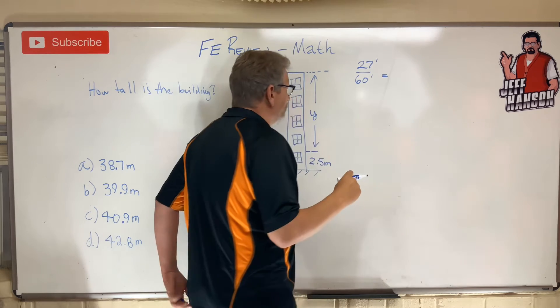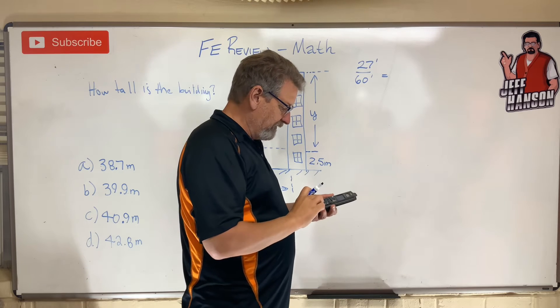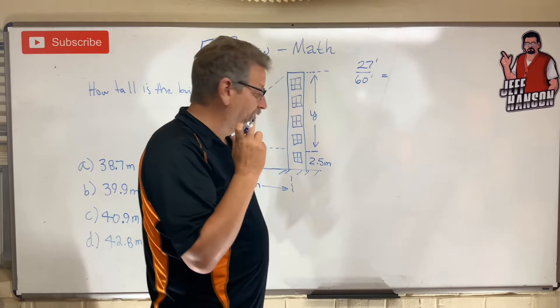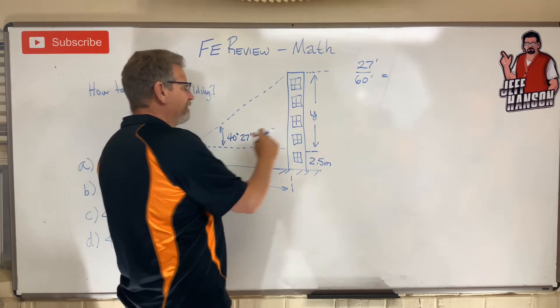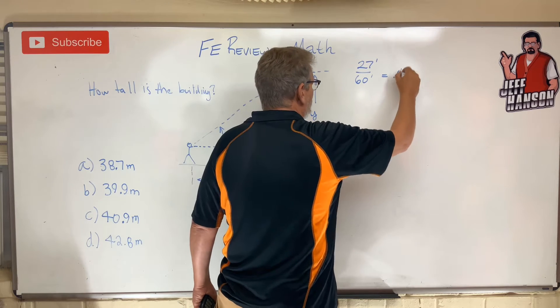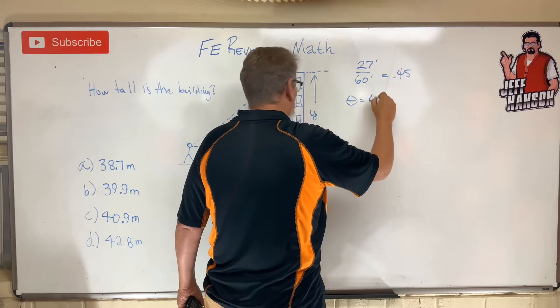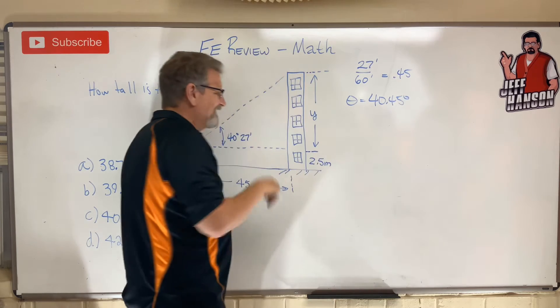That is, in decimal form, 27 divided by 60, which is 0.45. So what's this angle right here? This angle theta must be equal to 40.45 degrees. Okay, that's handy. Now I can put that in my calculator. They gave me this side of the triangle.